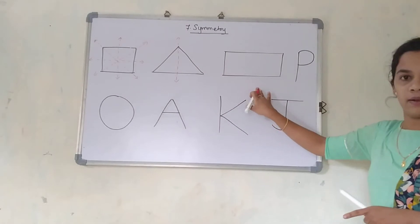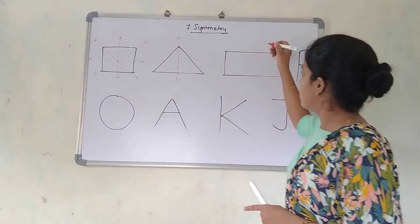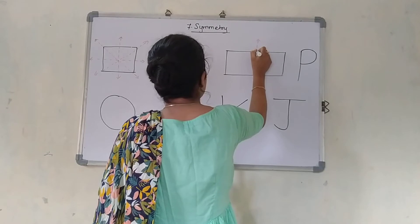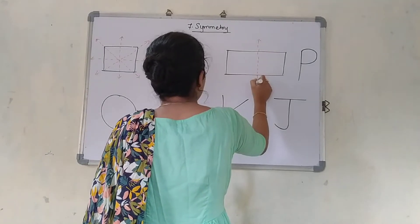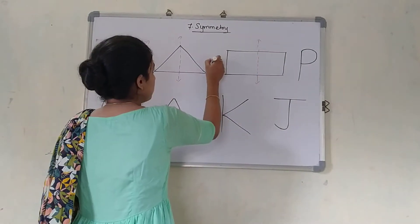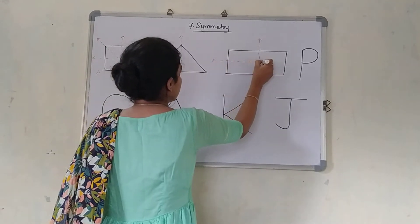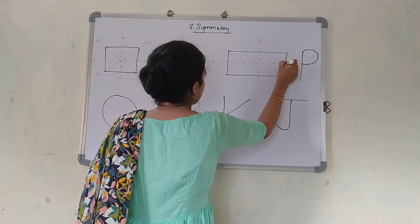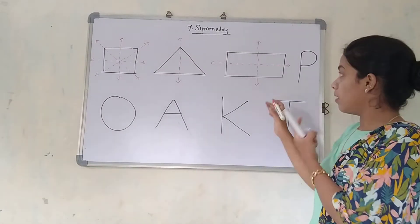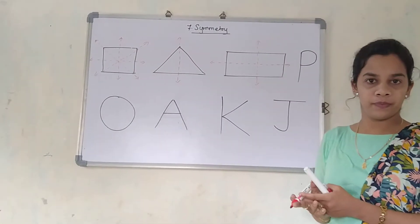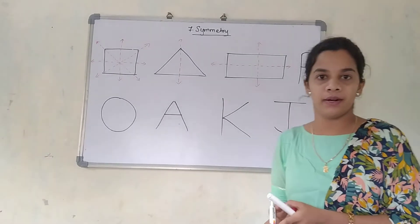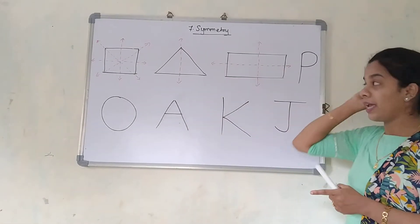If you observe this rectangle, I can divide it like this, and I can divide it like this also. I am very bad at drawing so just please bear with me. So here the axes of symmetry will be two — the lines passing through it that can equally divide it. So yes, this is also a symmetrical object.